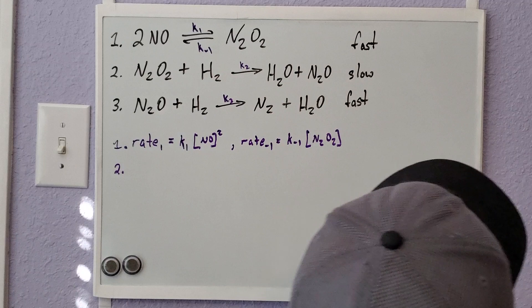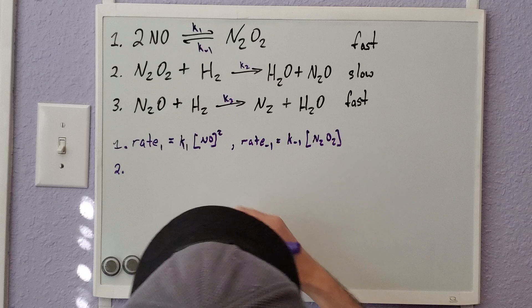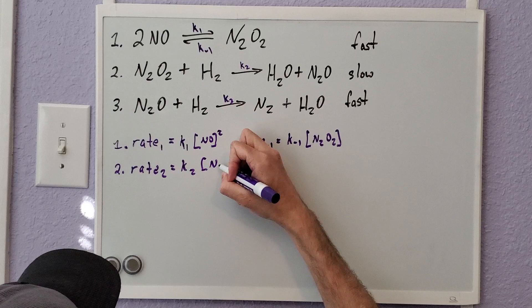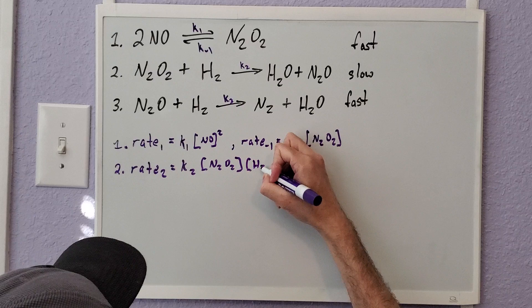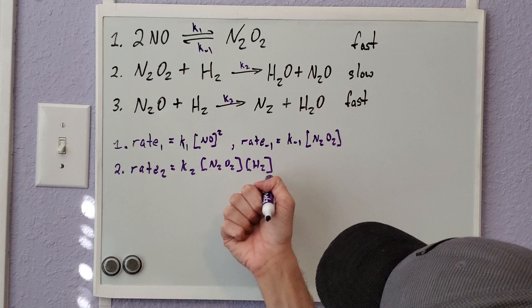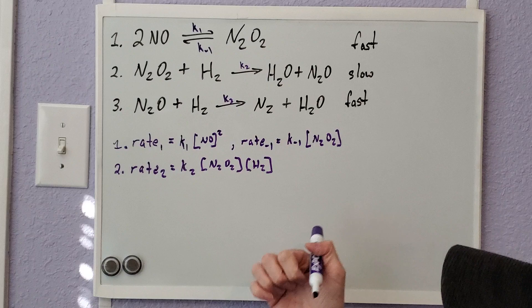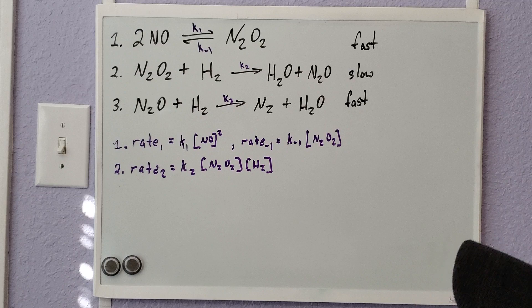For the second reaction, since it's non-reversible, Rate2 equals K2 times the concentration of N2O2 times H2. This is a one-to-one stoichiometric relationship, so there are no exponents on either concentration. We don't need to write the rate for step 3 because it's the slow step and won't influence the overall reaction rate.